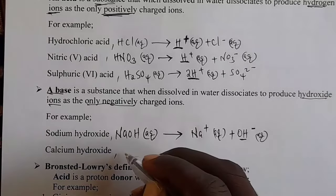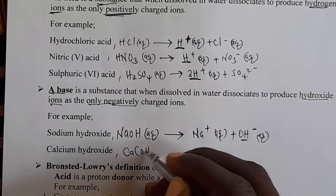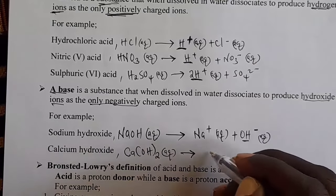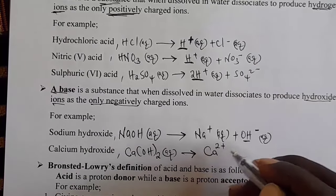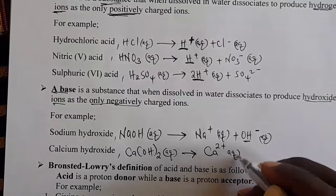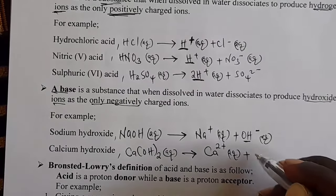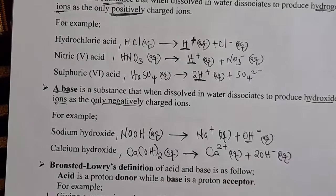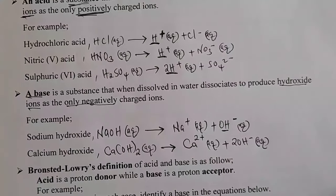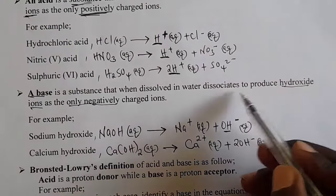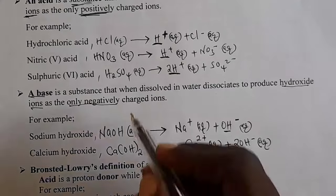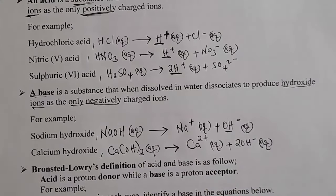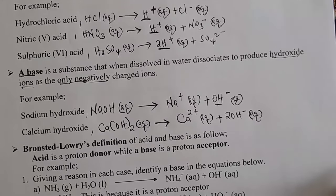Let's go to calcium hydroxide. Calcium hydroxide dissociates in water producing calcium ions and two hydroxide ions. So we are saying a base is a substance that when dissolved in water dissociates to produce hydroxide ions as the only negatively charged ions, as you can see in our two examples.